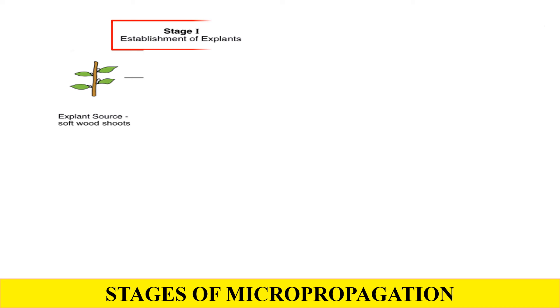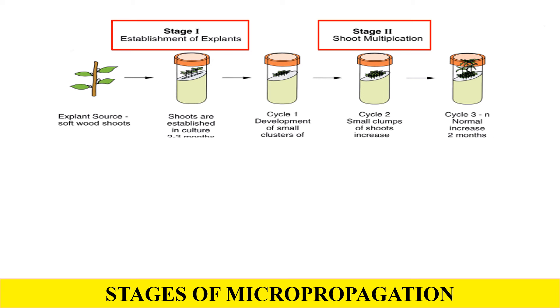These were the stages of micropropagation. To summarize them visually: this is the mother plant from where we take the explant. Stage 1 is the establishment of the explant, in which we take the explant from the mother plant. The second stage is the shoot multiplication stage — after taking the explant in the first stage, we place our explant into the shooting medium, which generally has high cytokinin. In the shooting medium, shoots are developed from the explant.